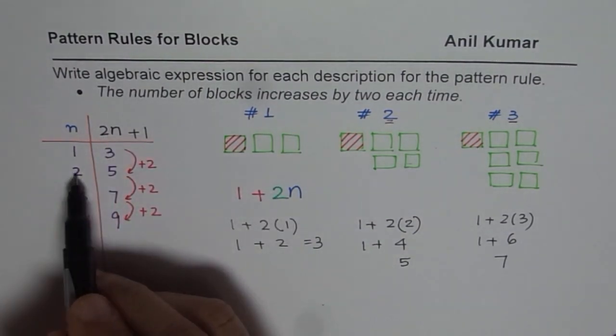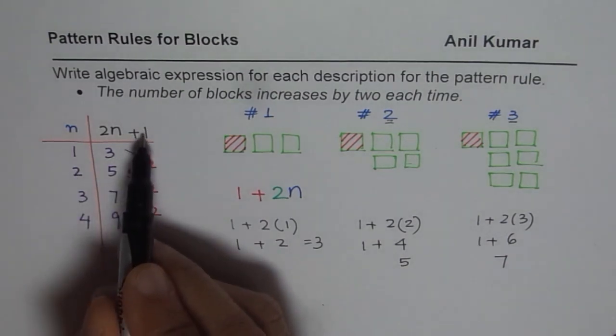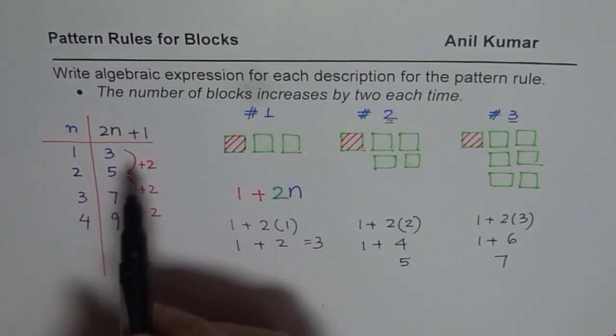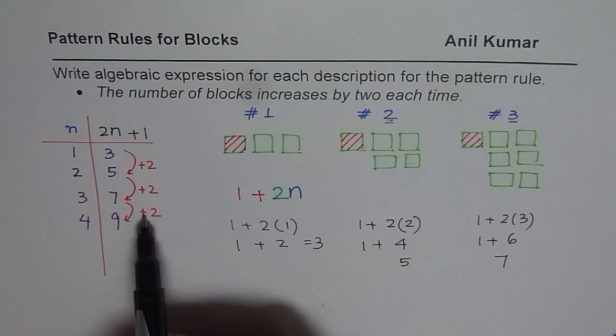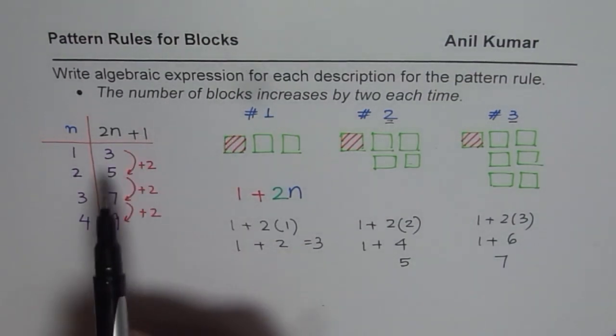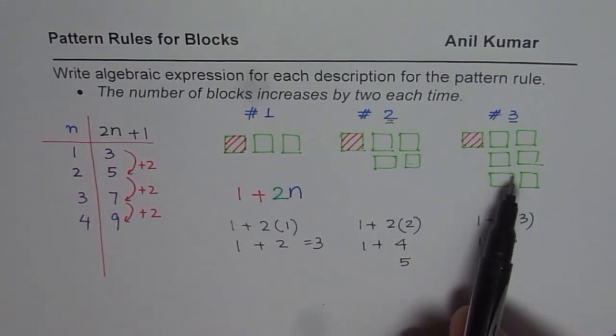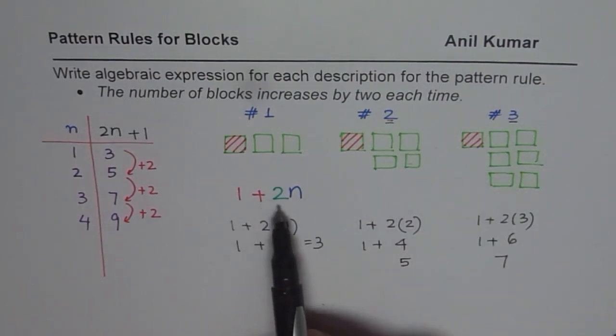What is two times two? Four. How do I get five? By adding one. So two times n plus one works. So two is the common difference, so that helps to form an algebraic expression. So you could do using your table, you can do with the help of blocks, and then whatever you write as an expression you should check it out.